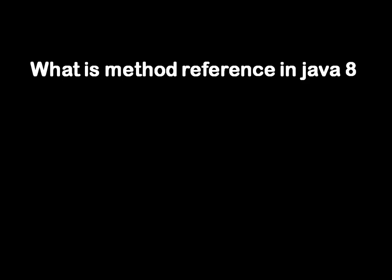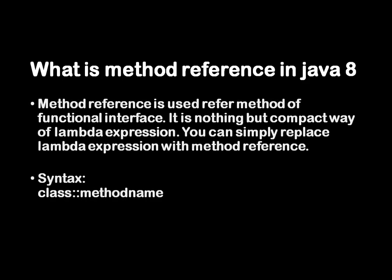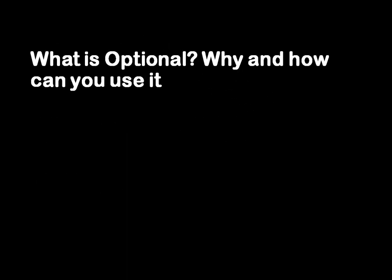What is method reference in Java 8? Method reference is a compact way of writing a lambda expression. You can use the syntax of class name and method name — directly calling that method without needing double braces or a full lambda expression.